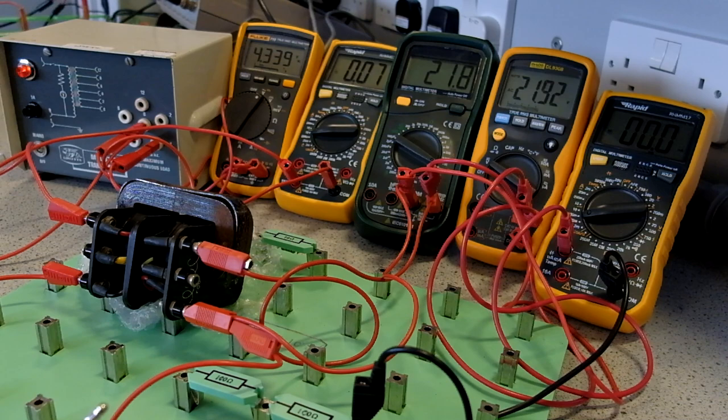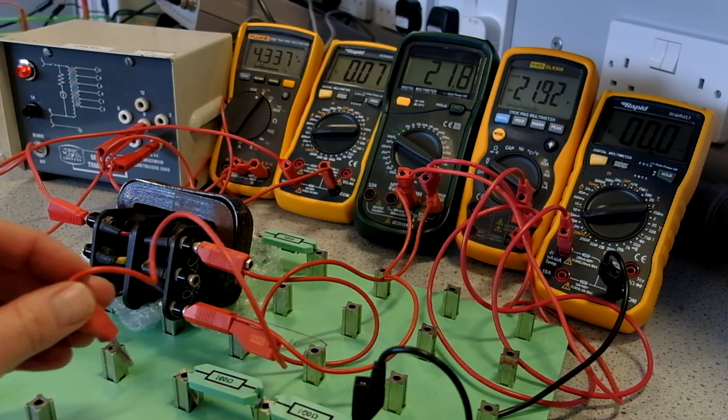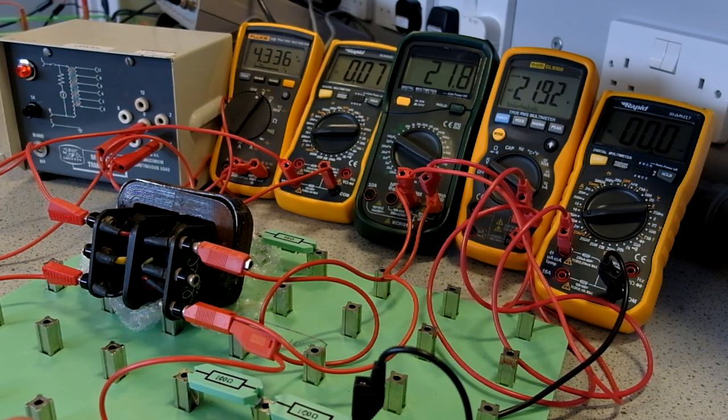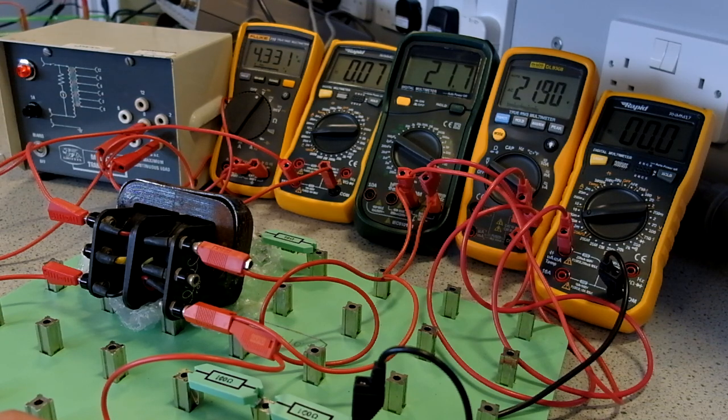So what we are seeing is the no load voltage, which we are anticipating based on the turns ratio of 4.3 times 5.2. We should have voltage coming out of 22.36. So we are slightly below that, and that is because we have losses in the system.